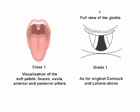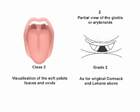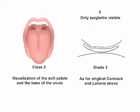A Mallampati class 1 view suggests ease of intubation and correlates with a Cormack and Lehane laryngoscopic view grade 1, 99 to 100% of the time. A Mallampati class 4 view suggests a poor laryngoscopic view — a Cormack and Lehane grade 3 or 4 — 100% of the time. Beware of the intermediate classes, which may result in all degrees of difficulty in laryngoscopic visualization.